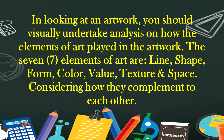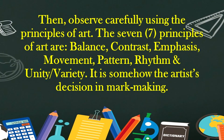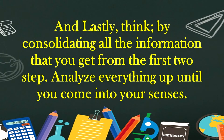In looking at an artwork, you should visually undertake analysis on how the elements of art played in the artwork. The seven elements of art are: line, shape, form, color, value, texture, and space — considering how they complement each other. Then observe carefully using the principles of art. The seven principles of art are: balance, contrast, emphasis, movement, pattern, rhythm, and unity or variety.